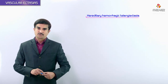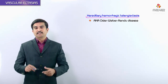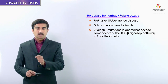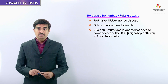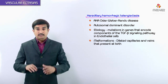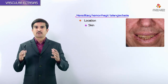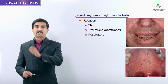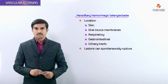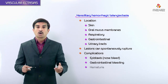A special type of telangiectasia is hereditary hemorrhagic telangiectasia, also called Osler-Weber-Rendu disease. This is an autosomal dominant disorder caused by mutations in genes encoding components of the transforming growth factor beta (TGF-β) signaling pathway in endothelial cells. These malformations are composed of dilated capillaries and veins, present at birth, and widely dispersed over the skin, oral mucosa, and respiratory, gastrointestinal, and urinary tracts. They can spontaneously rupture, causing severe epistaxis (nosebleed), gastrointestinal bleeding, or hematuria.